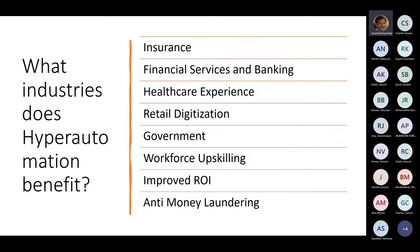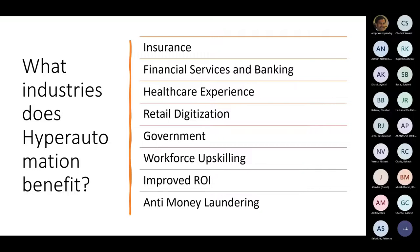As far as creation of drugs and medicines is concerned, there are so many permutations and combinations to be tried to find a stable DNA structure or atomic structure. All these things are done using AI and ML. For government-based organizations, workforce upscaling and all these things are taken care of using hyper automation. There are lots and lots of such examples where hyper automation makes sense.